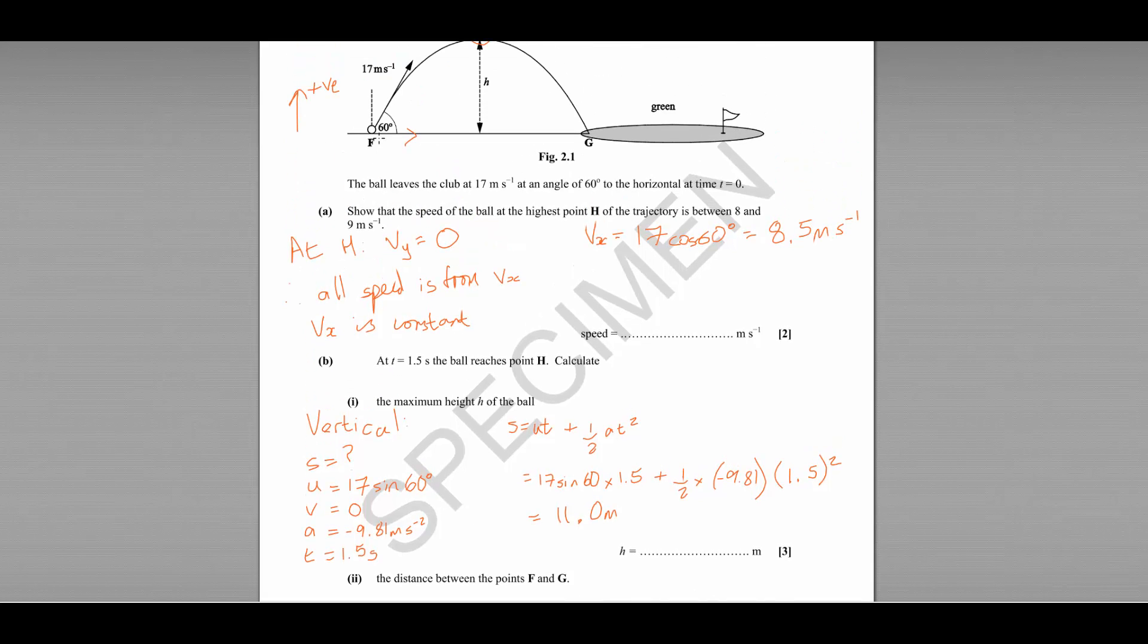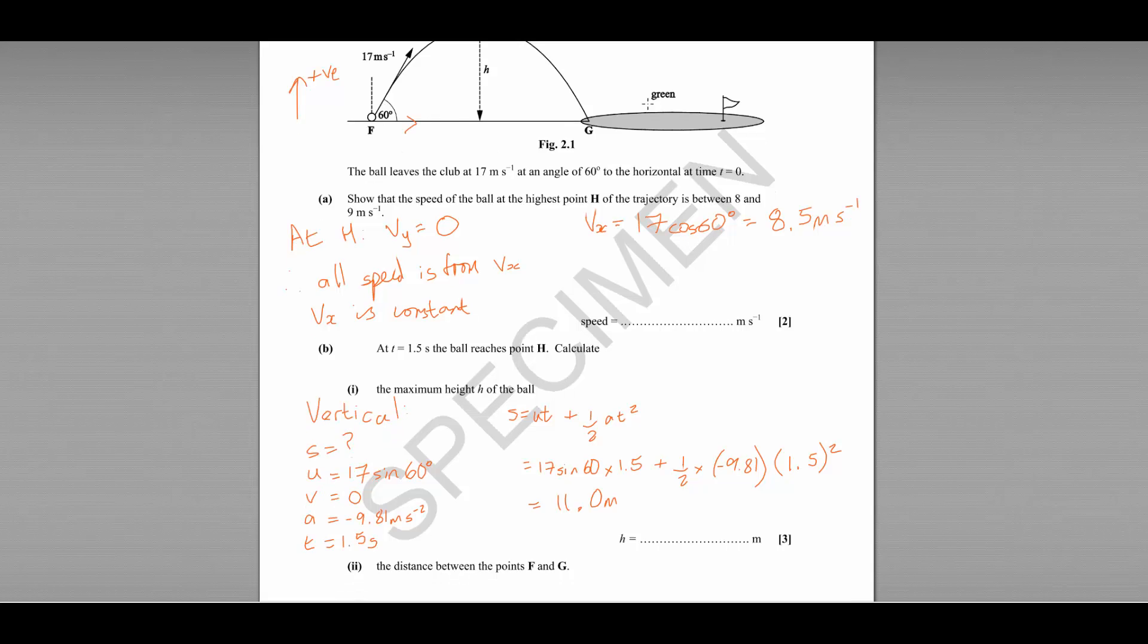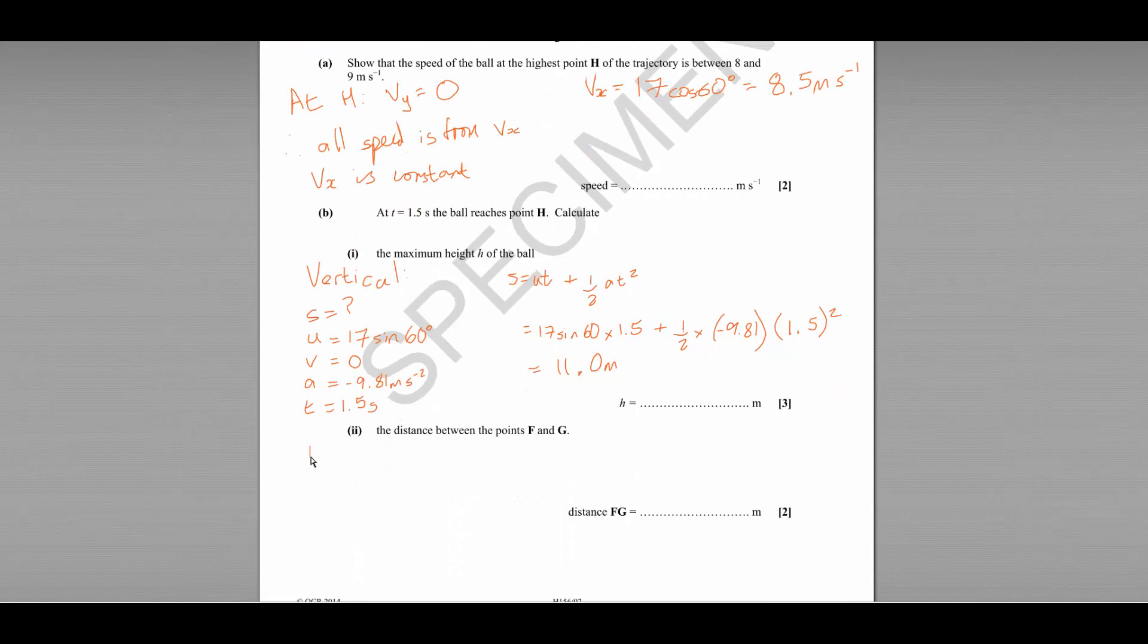Part 2 asks us to find the distance between the points F and G. So F is where the ball is set off. G is where the ball lands. Now we are considering only the horizontal motion. And we know that Vx is constant. So we can use velocity equals displacement over time rather than using SUVAT,